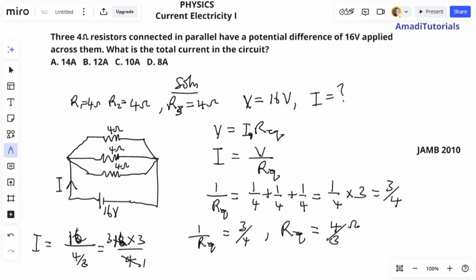So four will cancel, leaving 16 times three divided by four. Four times three is 12. That'll be 12 amperes, option B. Thank you.